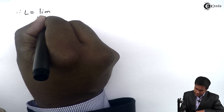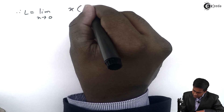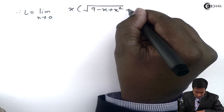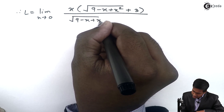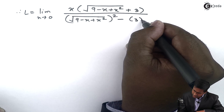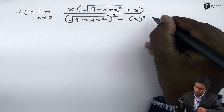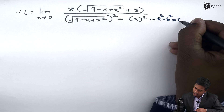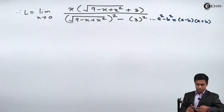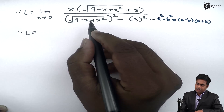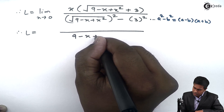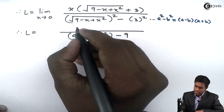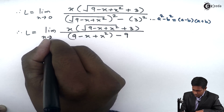The next step gives L equals the limit x tends to 0 of x times (square root of 9 minus x plus x squared plus 3), all upon (square root of 9 minus x plus x squared) squared minus 3 squared. Applying the formula, the square root and the square cancel in the denominator, giving us 9 minus x plus x squared minus 9.